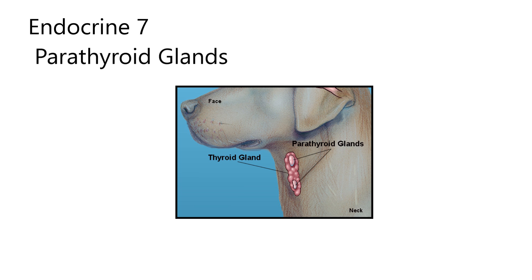In the dog and cat especially, there's a separate left thyroid gland, as shown in this picture of the left side of the dog. On the other side of the neck that we can't see, there would be the right thyroid gland. Embedded in these thyroid glands are parathyroid glands - para meaning next to or beside, so it's pretty descriptive.